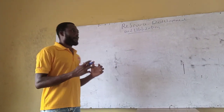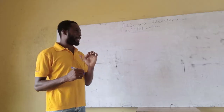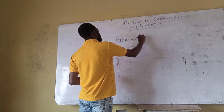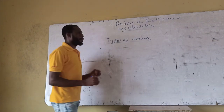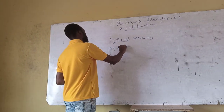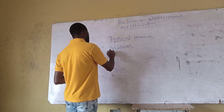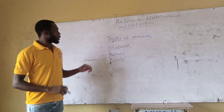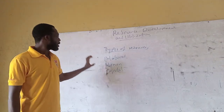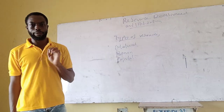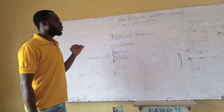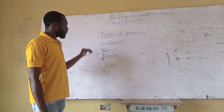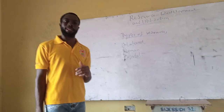Back to resources. Resources are grouped into three main types. We have the natural resources, the human resources, and the capital resources. Going forward, we are going to take a look at them one after the other — starting first with natural resources before we move on to human resources and capital resources.